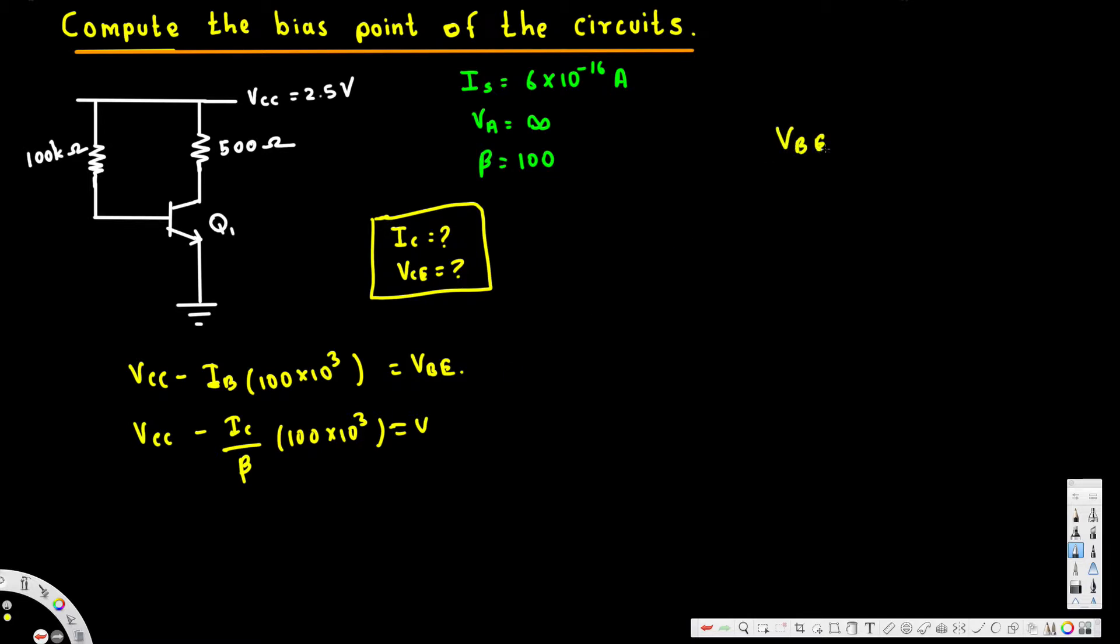Vbe is equal to Vt ln Ic over Is. So if we bring this one into this pattern, we only have one unknown variable because Vt is a constant value that always remains the same, that's 26 times 10 to the power of minus 3.